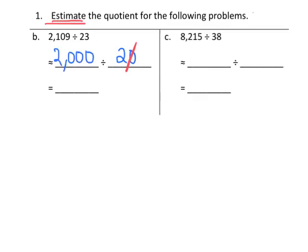And in this case, that's the same thing as dividing 200. 200, so that means this little comma would go away, 200 divided by 2, and that's 100. So there's my estimation there.